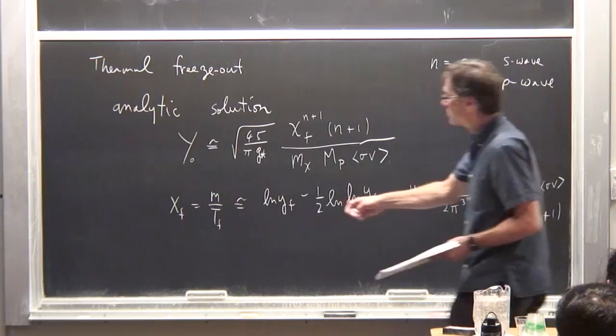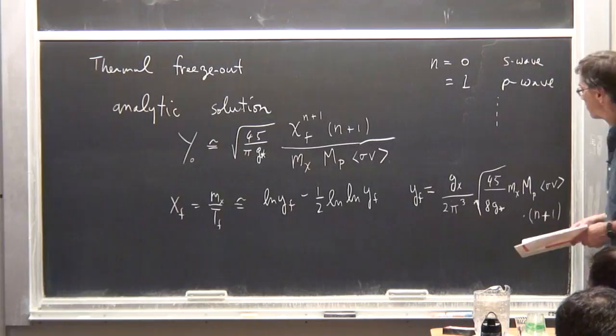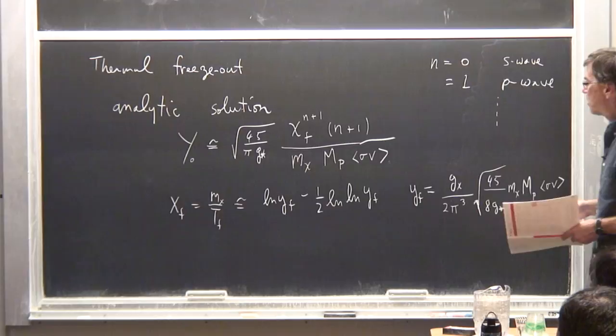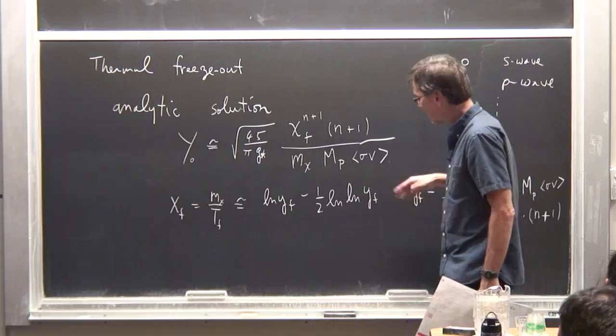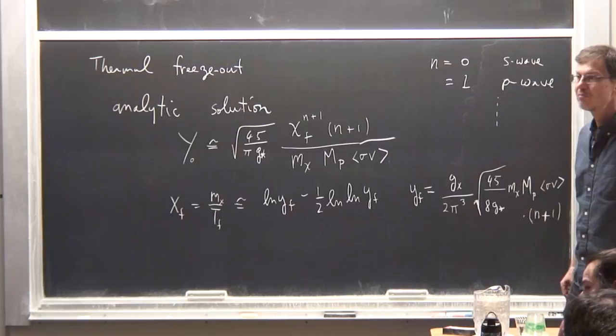X_freeze-out is M over T at freeze-out, analytically determined to be the logarithm of some quantity minus Y_F minus half log-log of Y_F, where Y_F is the number of degrees of freedom of the chi particle — for instance, 2 if it's a Majorana fermion — over 2π cubed, times the square root of 45 over 8 G-star, times M_chi times M_Planck times sigma-V times (N+1). The reason for the log-of-log is that the real equation is transcendental and you solve it by iteration; this is the leading approximation and the next-to-leading, and beyond that you don't need it.